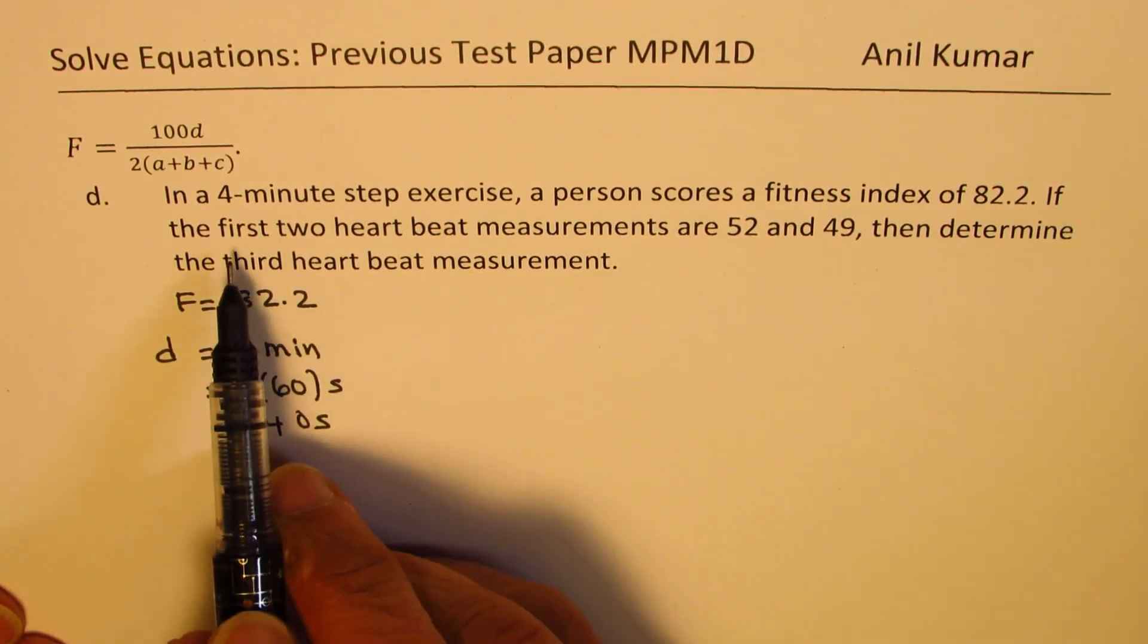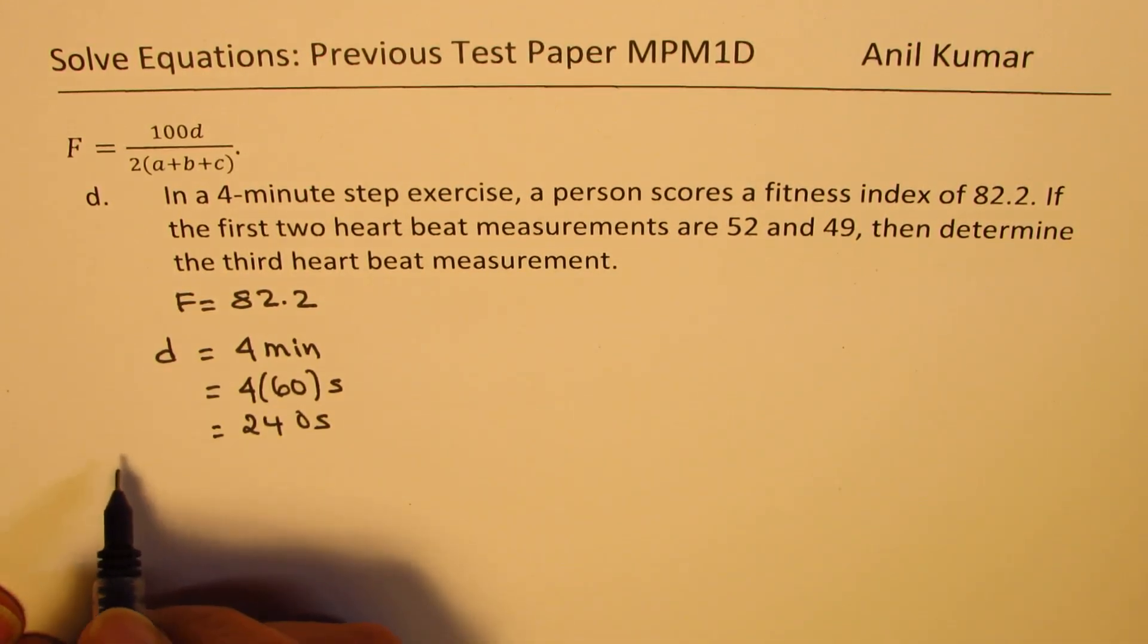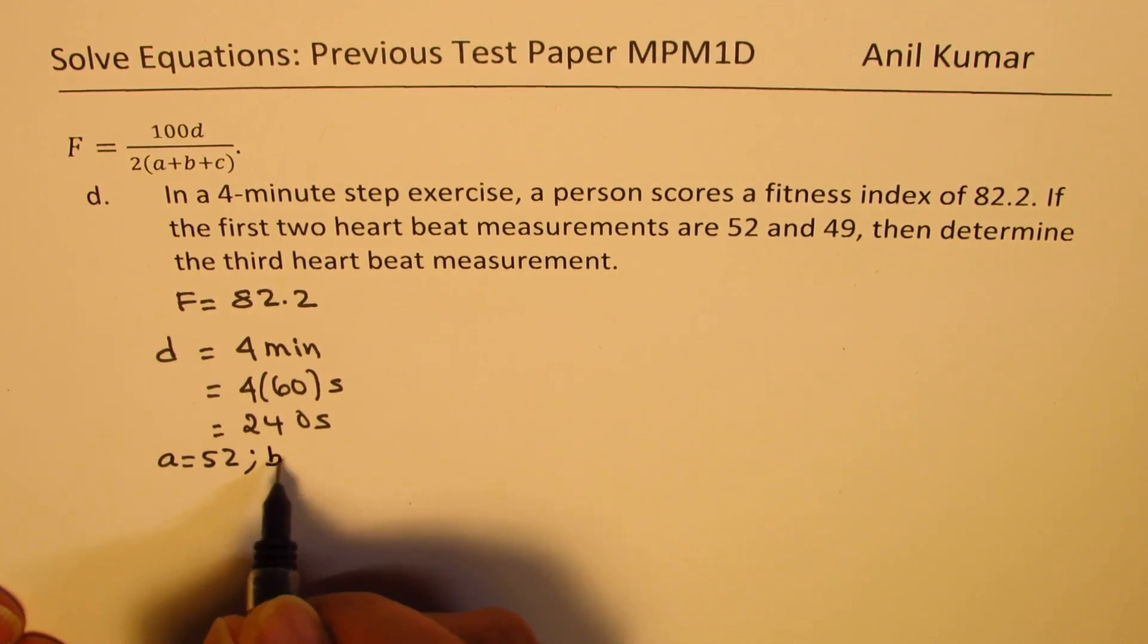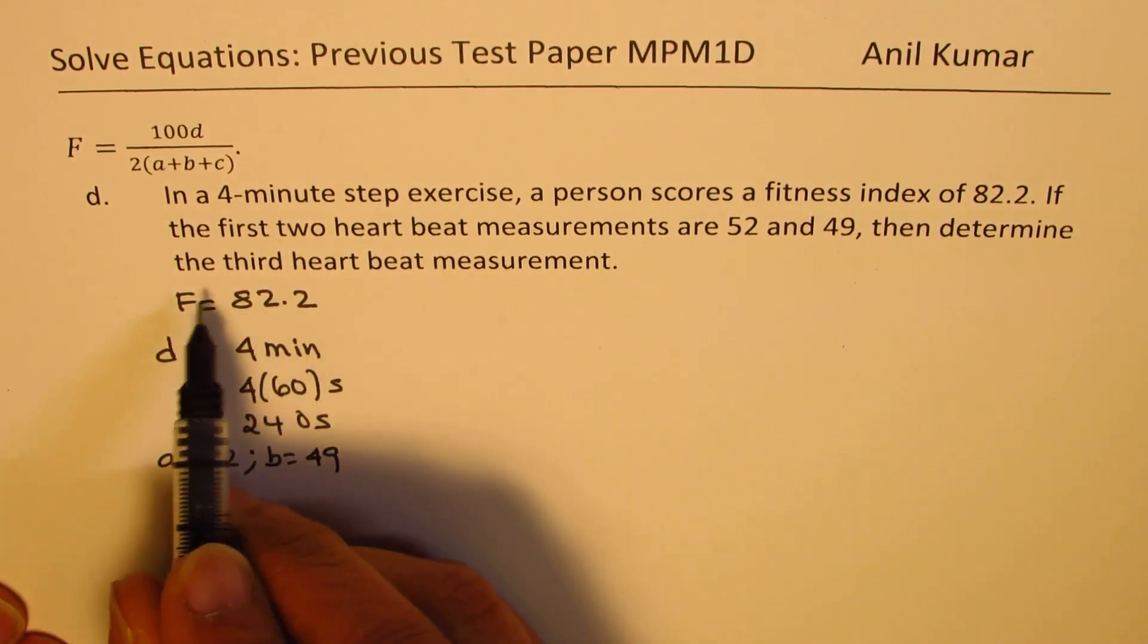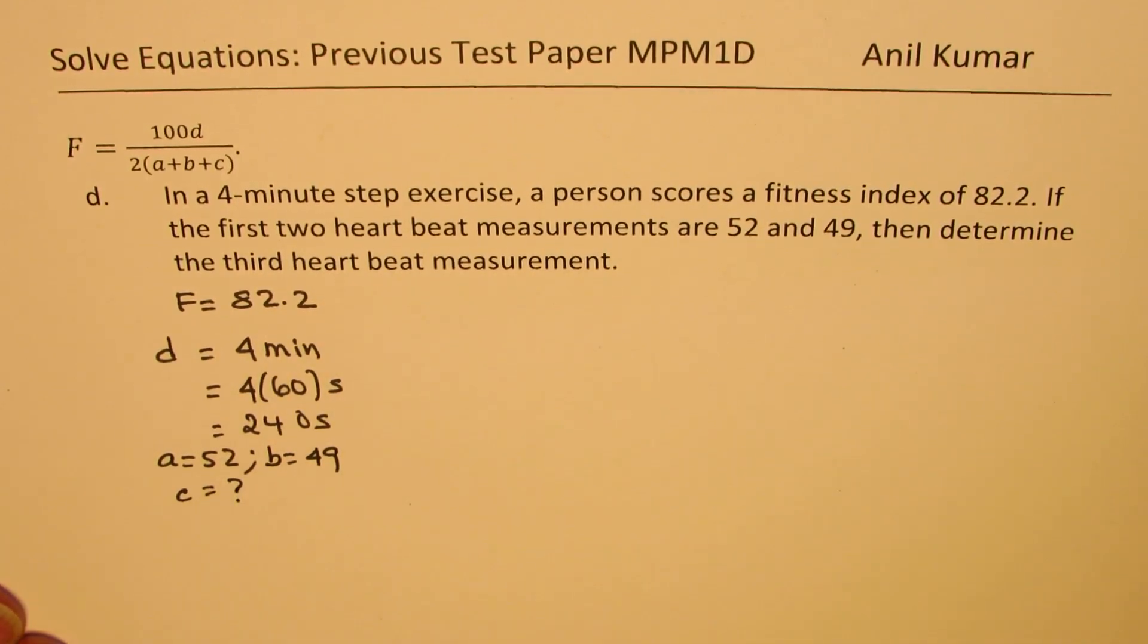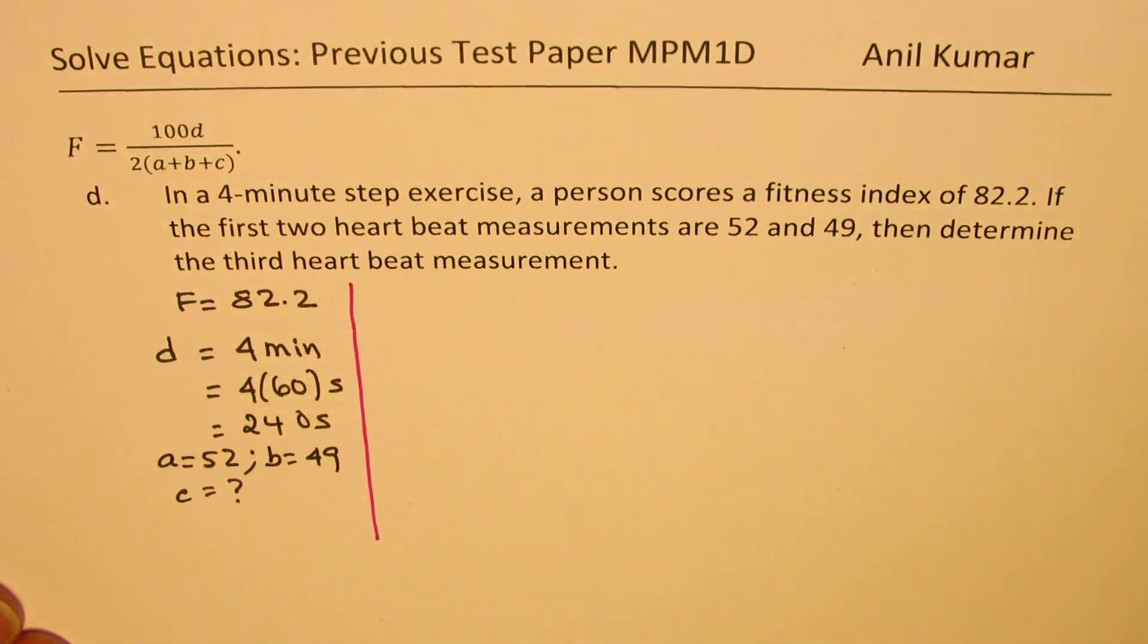If the first two heartbeat measurements are 52 and 49. So A is 52 and B is 49. Determine the third heartbeat measurement, that is C, which we need to find. So that's the question for you. I would like you to now pause the video, answer the question, and then look into my suggestions.